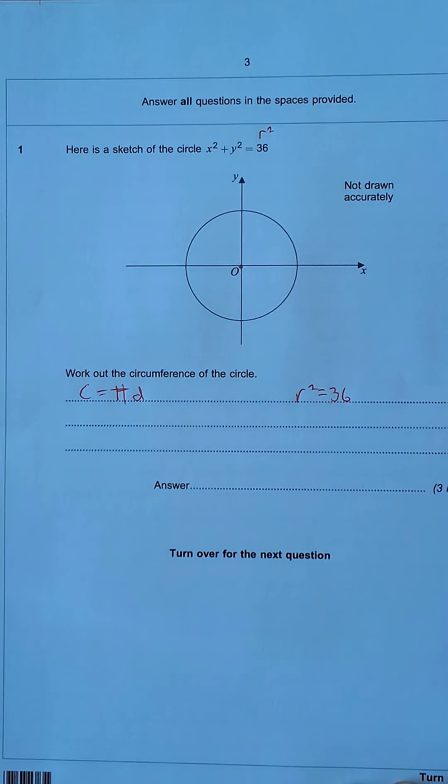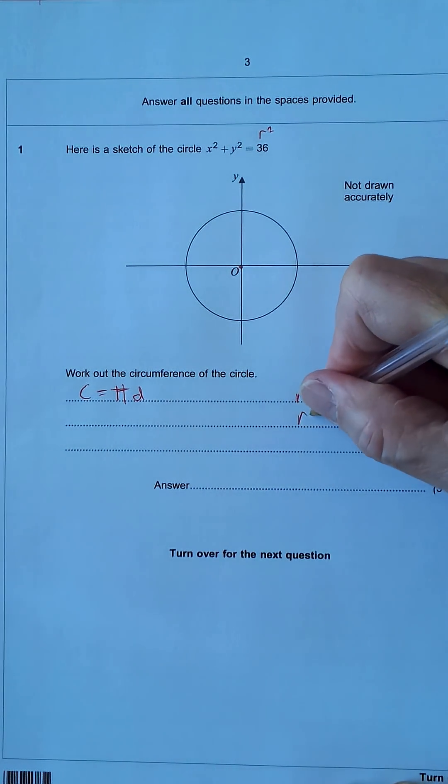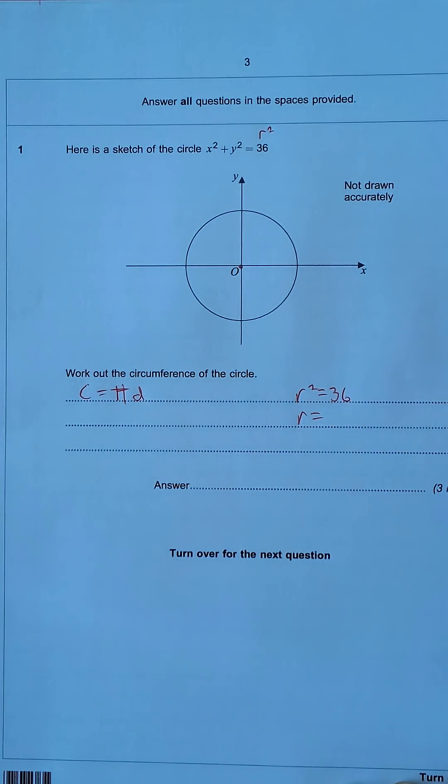We'll square root that to get the radius. r equals plus or minus 36, but we can't have a negative length. So it's r equals 6 centimetres.